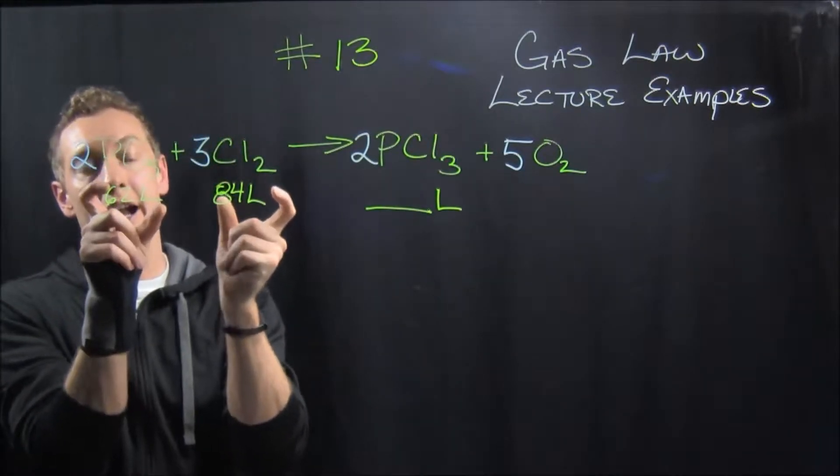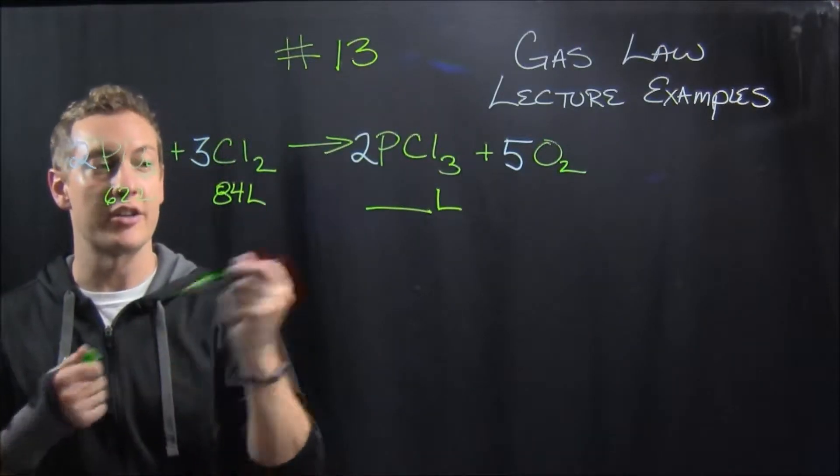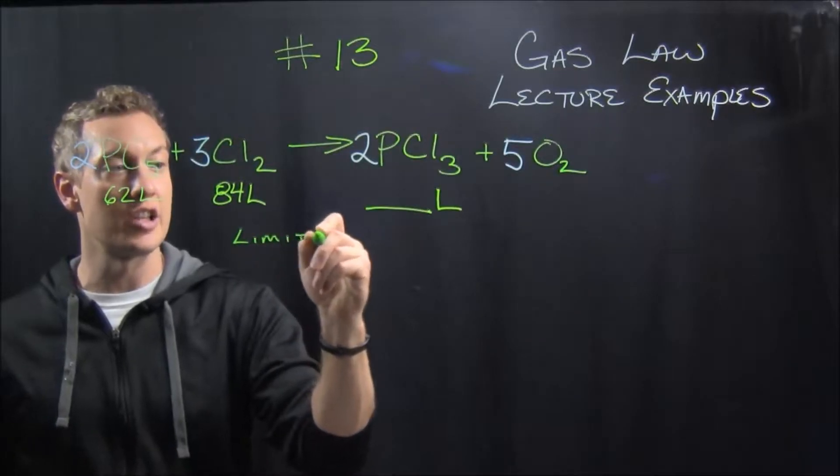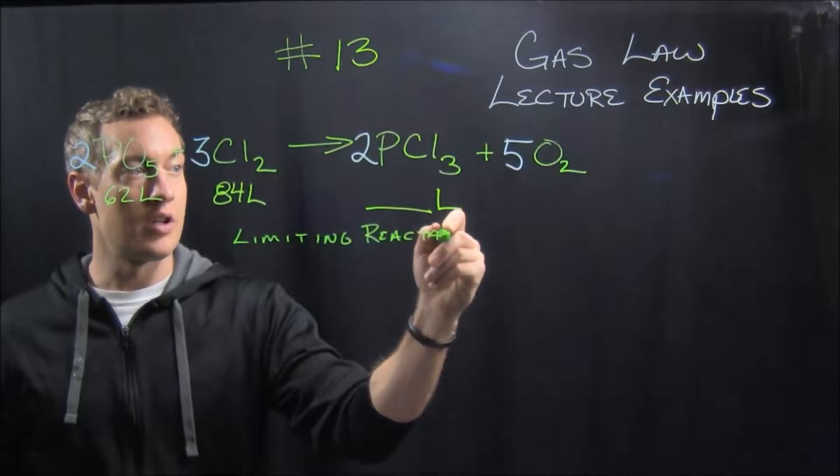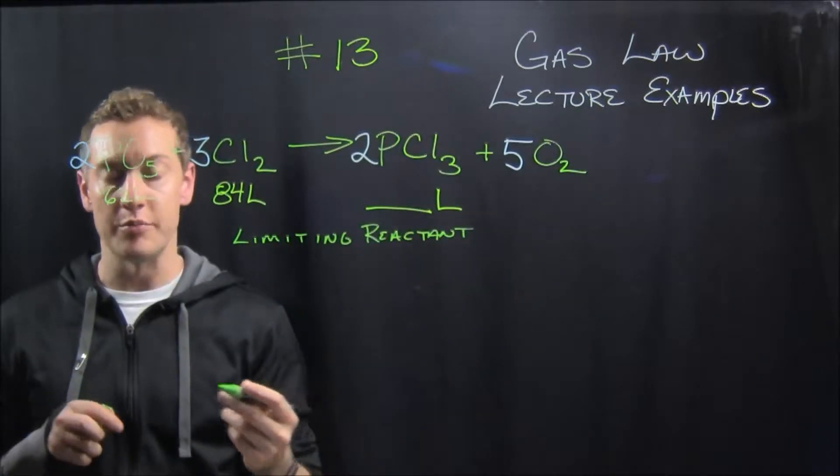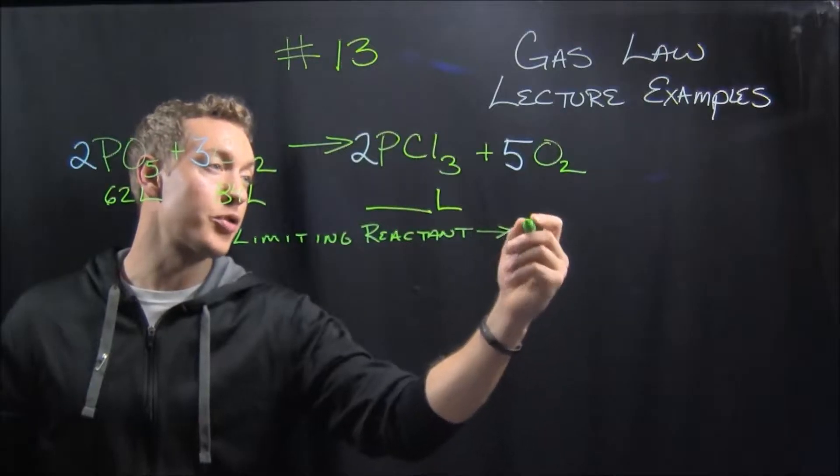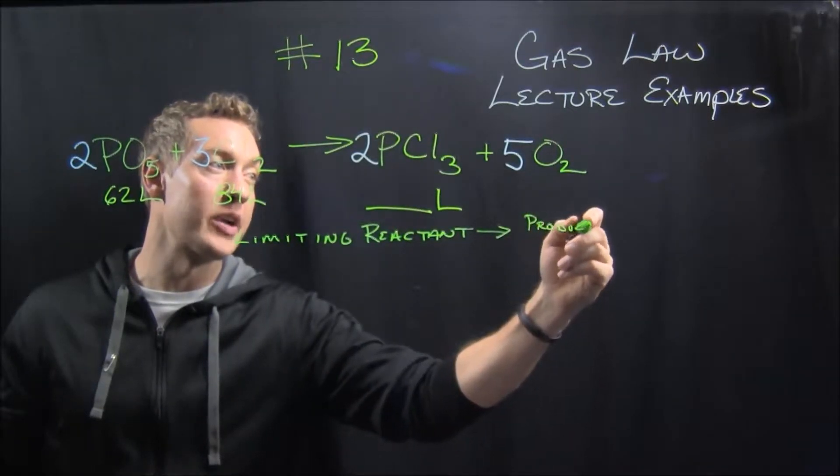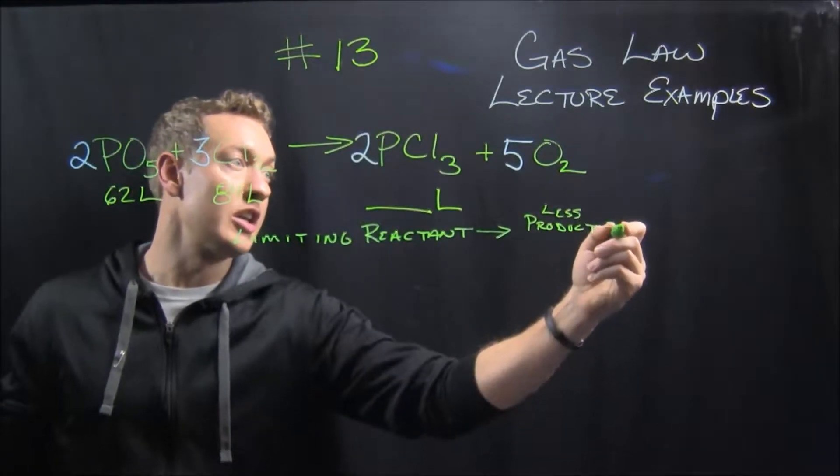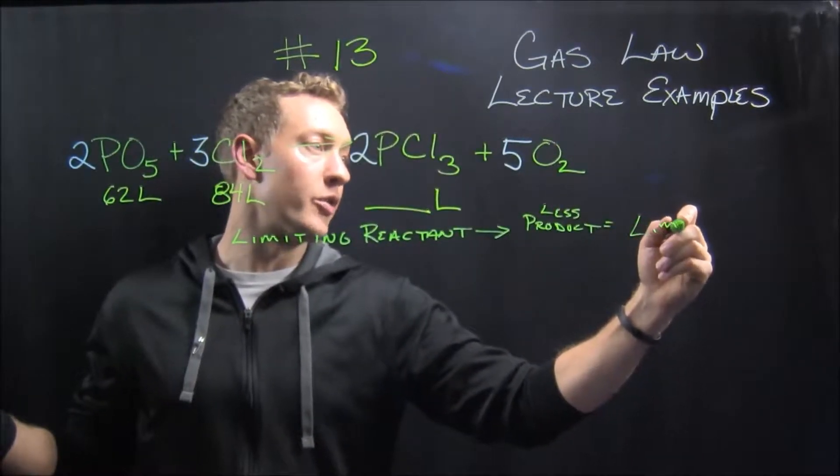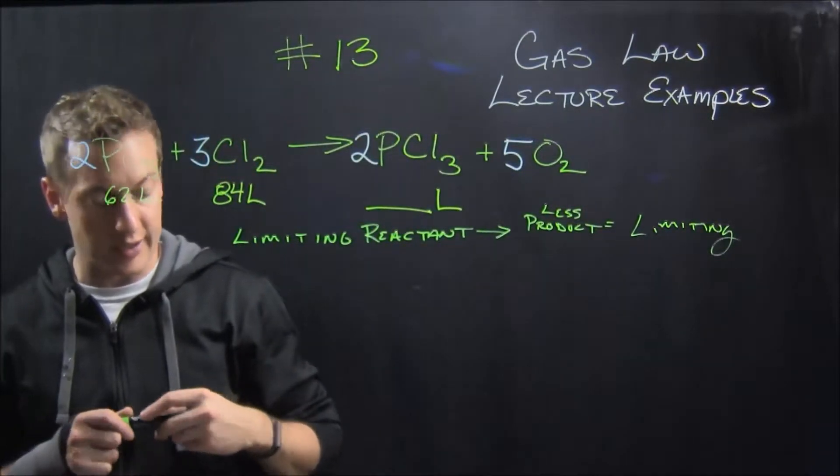Now the fact that they told us about both reactants should make the little hairs on the back of your neck stand up and say this is a limiting reactant problem. And remember with limiting reactant problems, you have to find out how much product can be made from each of the reactants, and then the less amount of product equals your limiting reactant, and the greater amount of product would be your excess reactant.